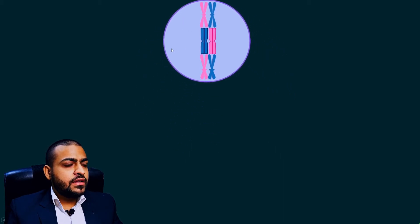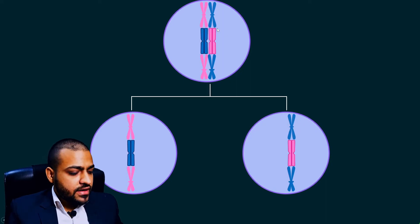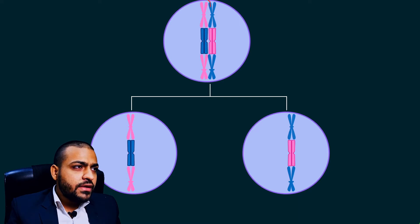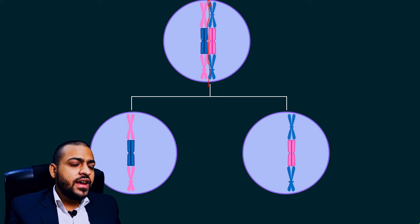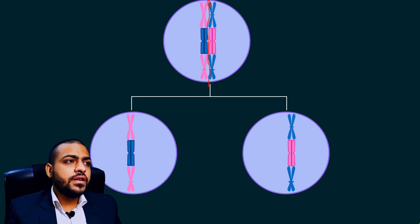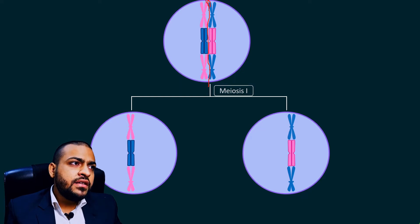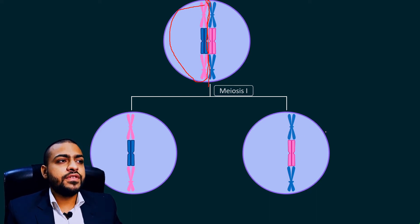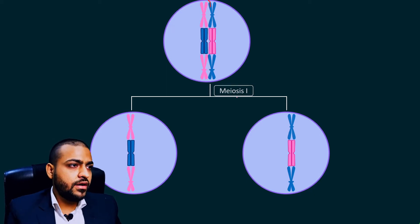Let's suppose this is a primary oocyte or primary spermatocyte and it has to undergo meiosis one. As it undergoes meiosis one, these homologous chromosomes will separate out — they will disjoin. In prophase of meiosis one they are joined together and undergo crossing over, that is the exchange of their genetic material. After crossing over, as meiosis one ends, these homologous chromosomes disjoin.